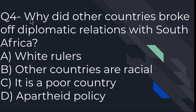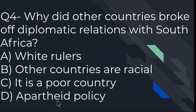Why did other countries break off diplomatic relations with South Africa? The options are: white rulers, other countries are racial, it is a poor country, or apartheid policy. According to the chapter, D is the right option — it was the apartheid policy. Let us move to the next question.